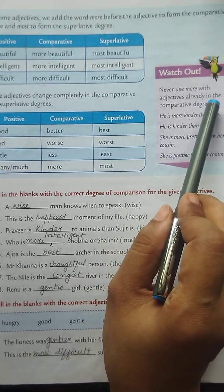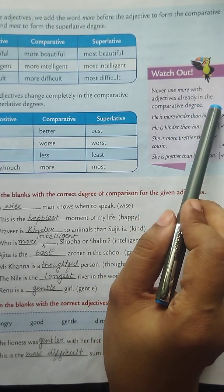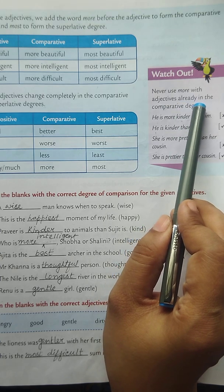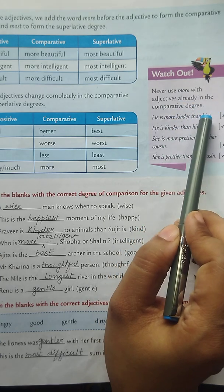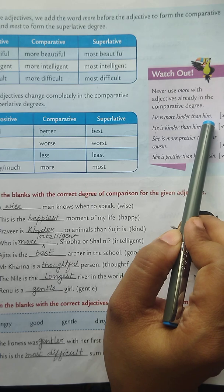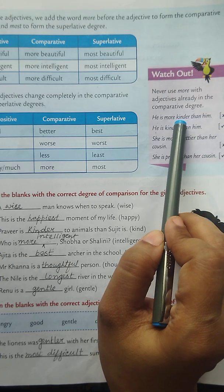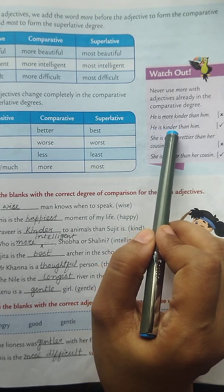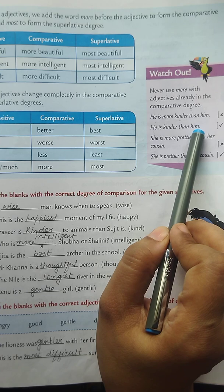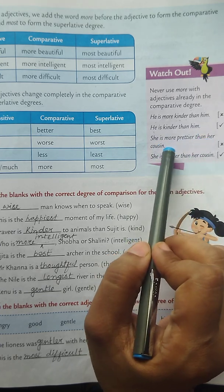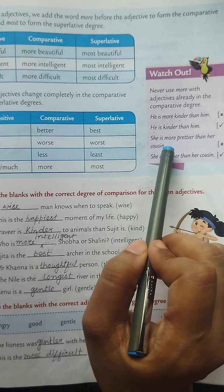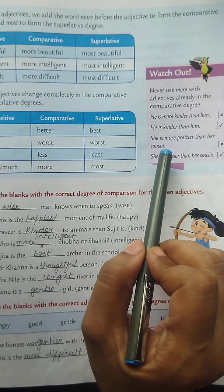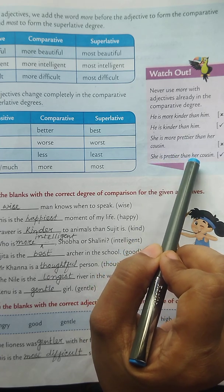Never use MORE with adjectives already in the comparative degree. For example, 'he is more kinder than him' is a wrong sentence, because you have already used the comparative degree. The correct sentence is: he is kinder than him. Similarly, 'he is more prettier than her cousin' is wrong — the correct sentence is: she is prettier than her cousin.